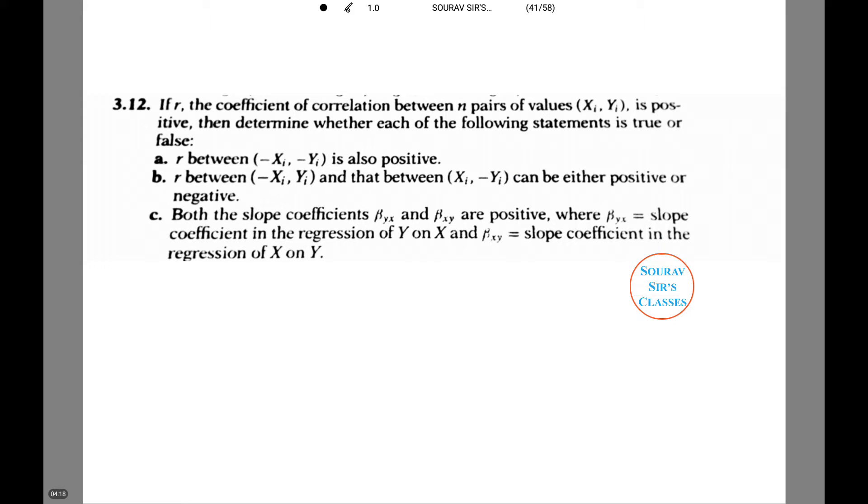If r, the coefficient of correlation between n pairs of values (xi, yi) is positive, now we have to determine whether the following statements are true or false. Let's start off with number A.